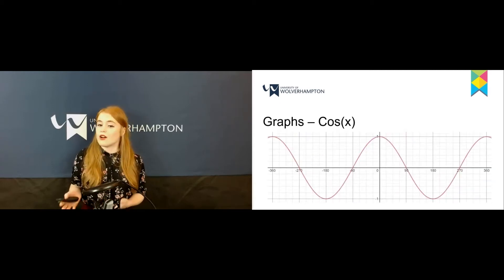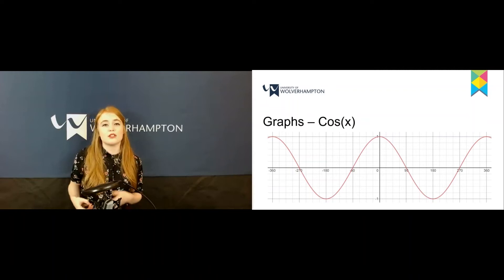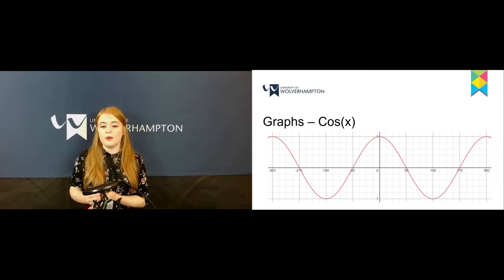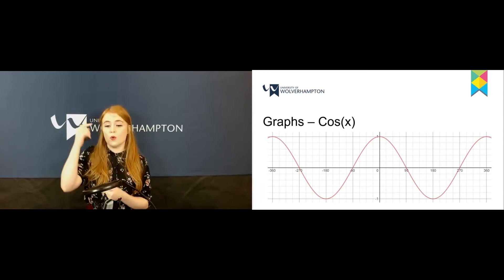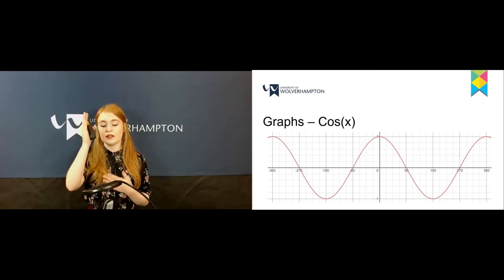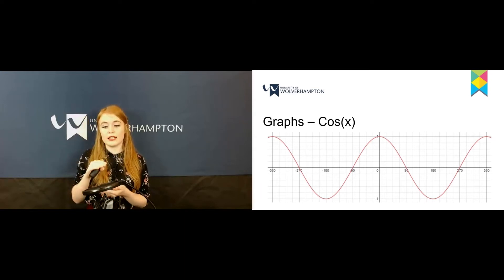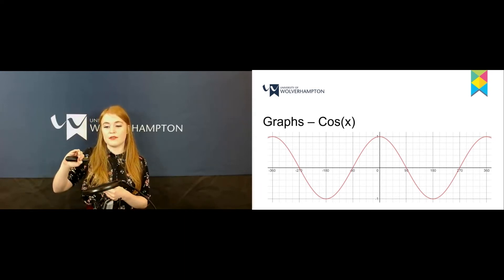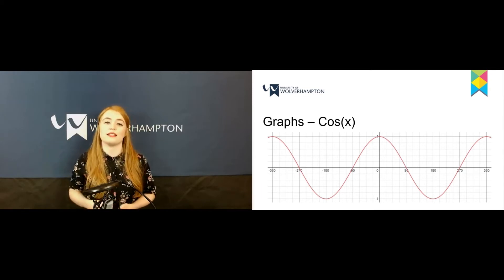This is the cosine graph. It looks very similar to the sine graph but with differences. Whereas the sine graph went through (0,0), the cosine graph starts at 1 at 0 degrees, comes down to 0 at 90 degrees, down to -1 at 180, up to 0 at 270, and back to 1 at 360.